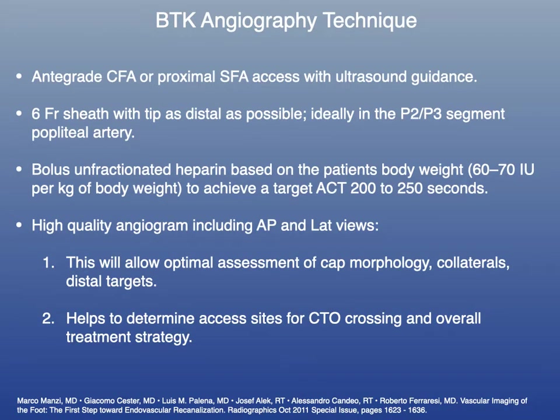When it comes to angiography, I like to achieve antegrade CFA or proximal SFA access with ultrasound guidance. I usually place a six French sheath with its tip as distal as possible, ideally in the P2 or P3 segment of the popliteal artery. A six French sheath allows me to use an 014 and an 018 system if I'm performing dual tibial artery interventions or a pedal loop reconstruction. Once access is achieved, I give heparin 60 to 70 international units per kilogram of body weight to achieve a target ACT between 200 to 250 seconds.